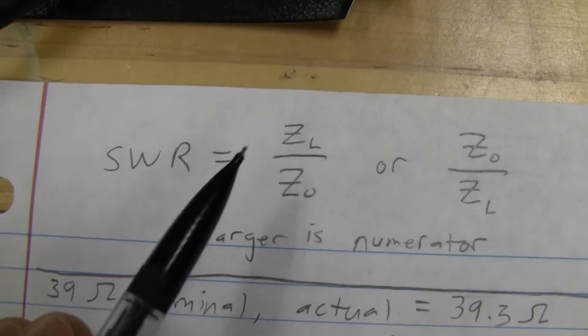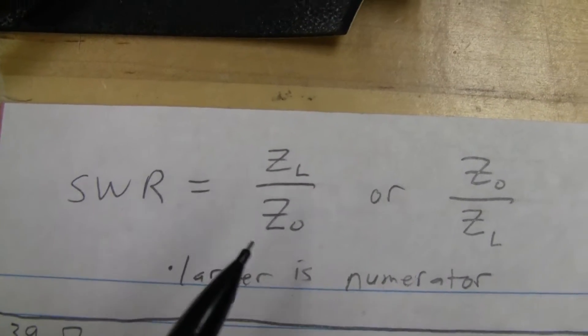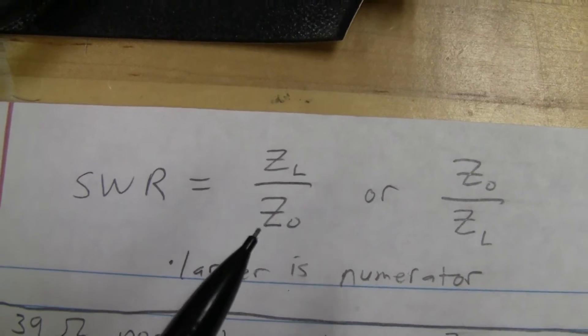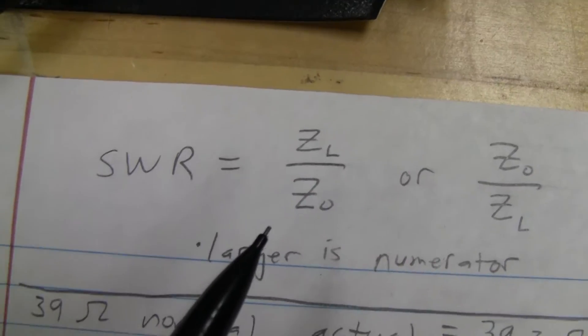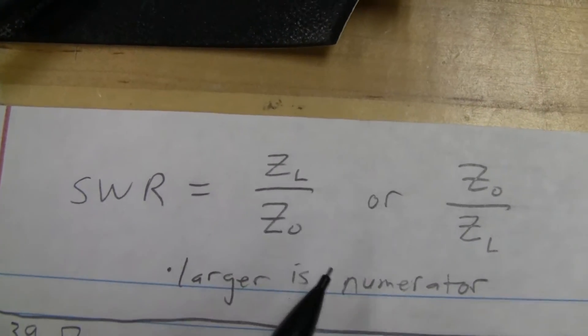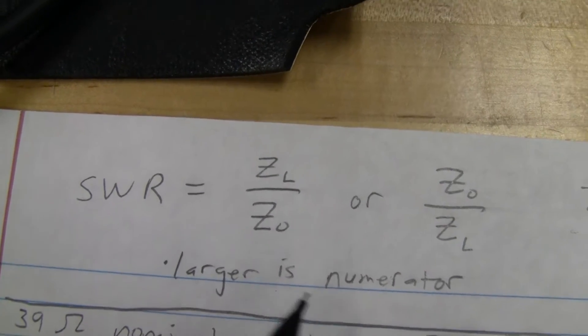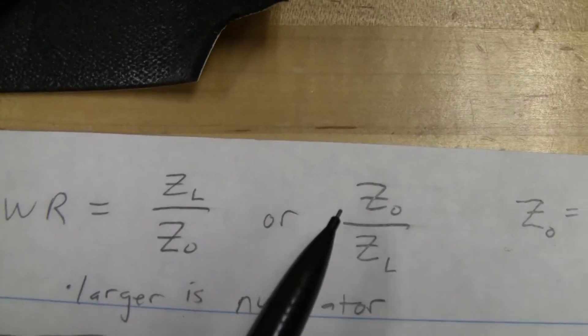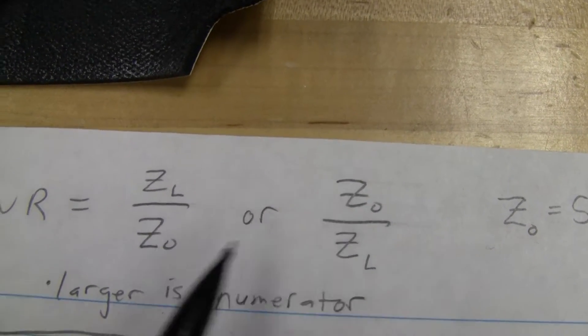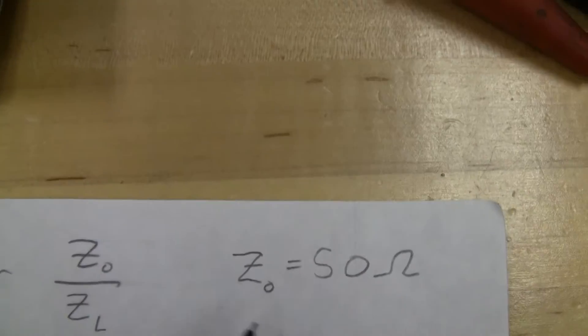Now there are a whole bunch of ways you can do this. You can also do it with reflected and transmitted power if you have a meter that can measure that. But for simplicity and the way I did this, we're just going to use this ratio here. Since an ideal SWR is 1 and it goes up from there, whichever value is larger will be our numerator.